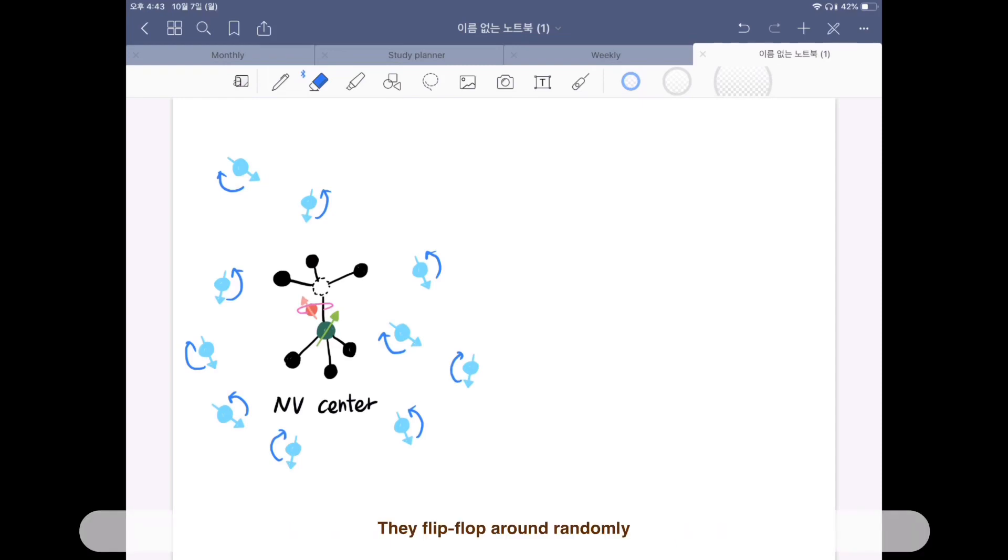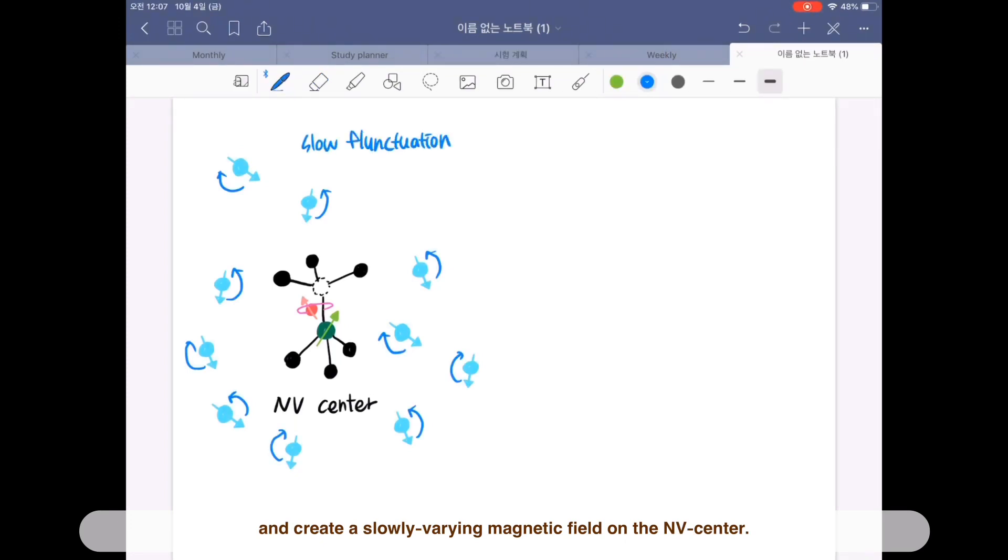They flip-flop around randomly and create a slowly varying magnetic field on the NV center.